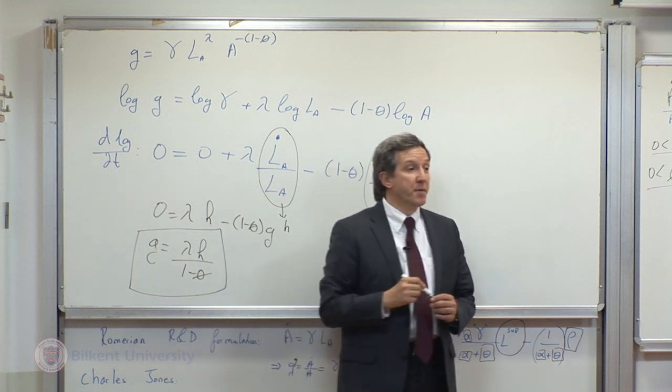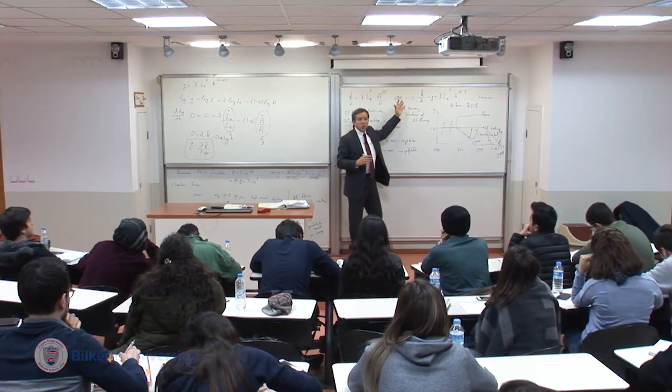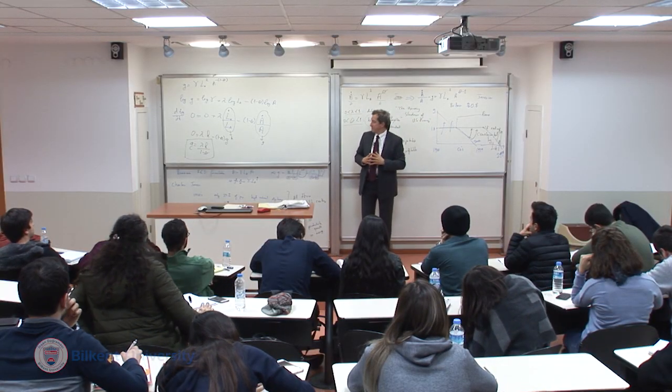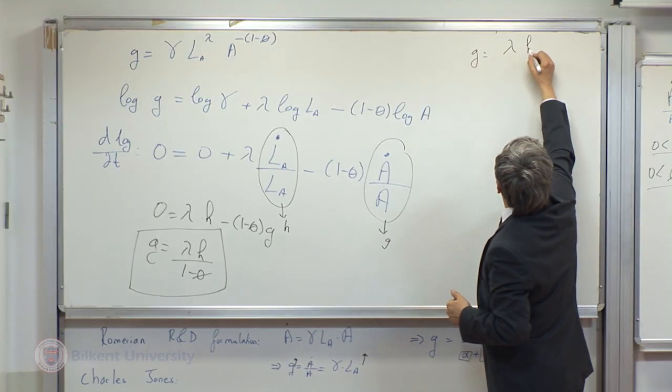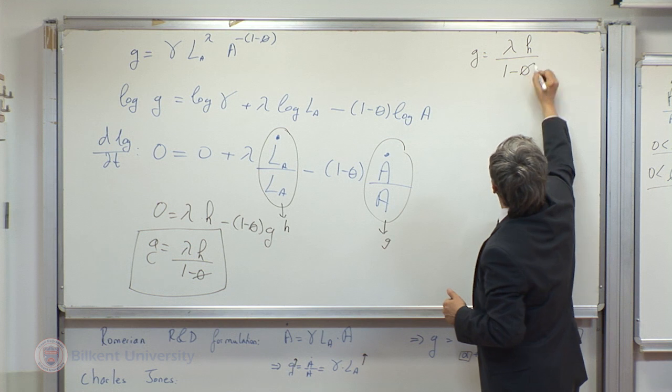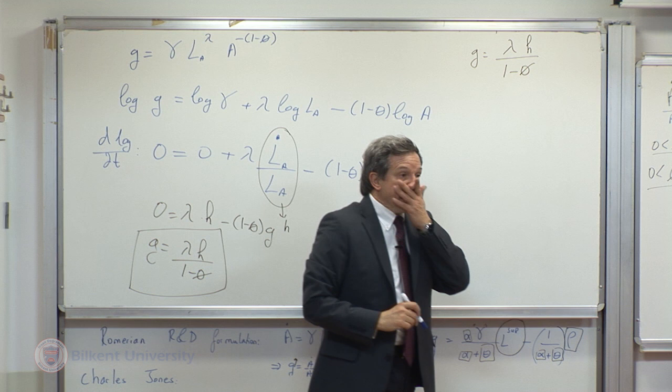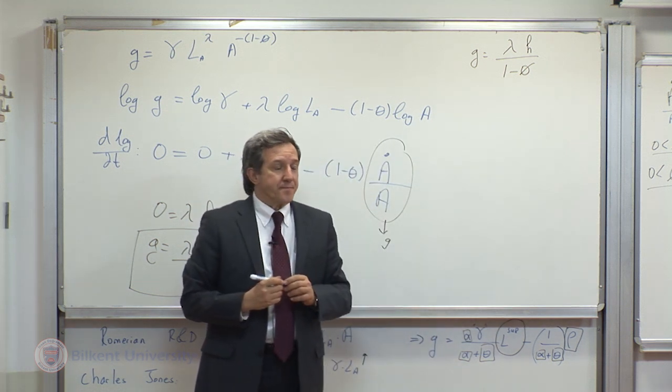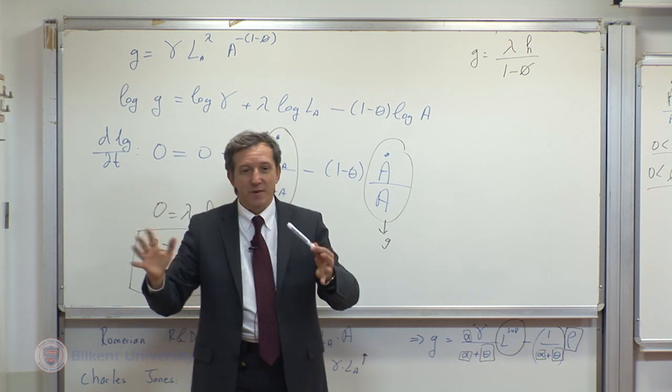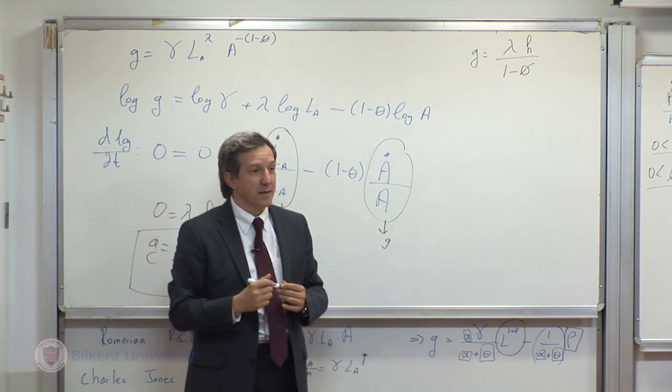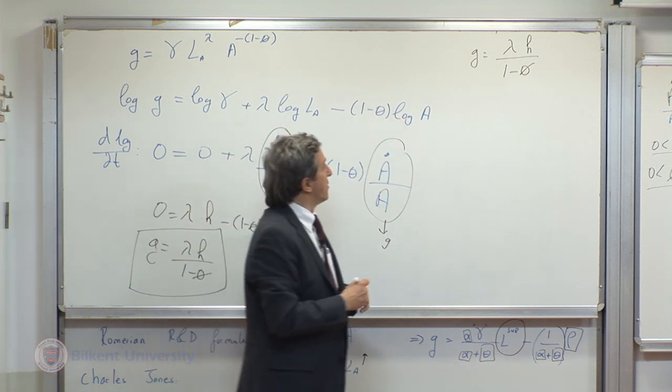This is the equilibrium growth rate in general form, originating from Jonesian R&D function. Lambda times H, lambda times H minus theta. This is the most general form. This is more or less when, what, when is likely to happen a generalization. You can study this case by case.